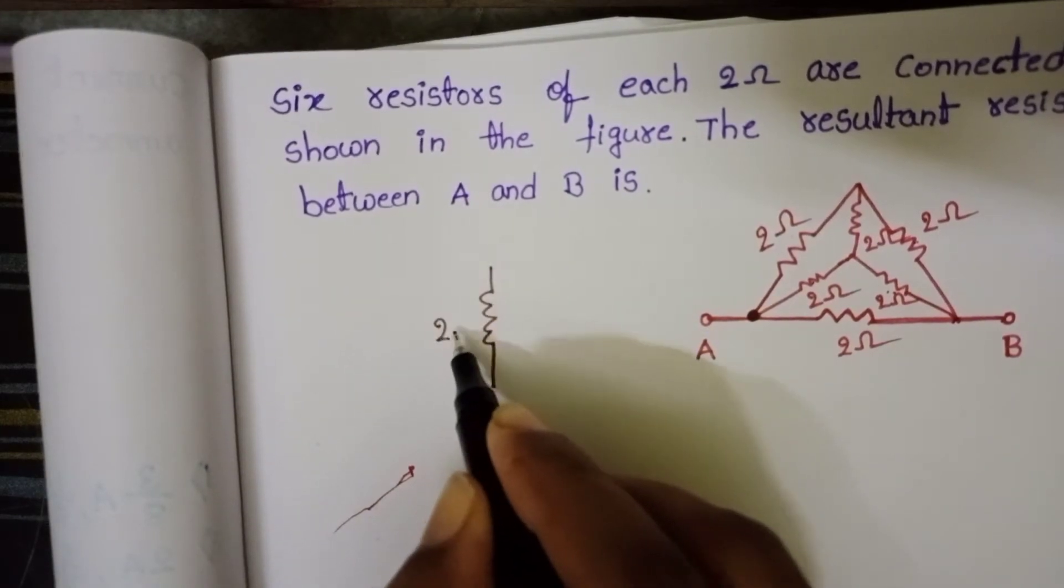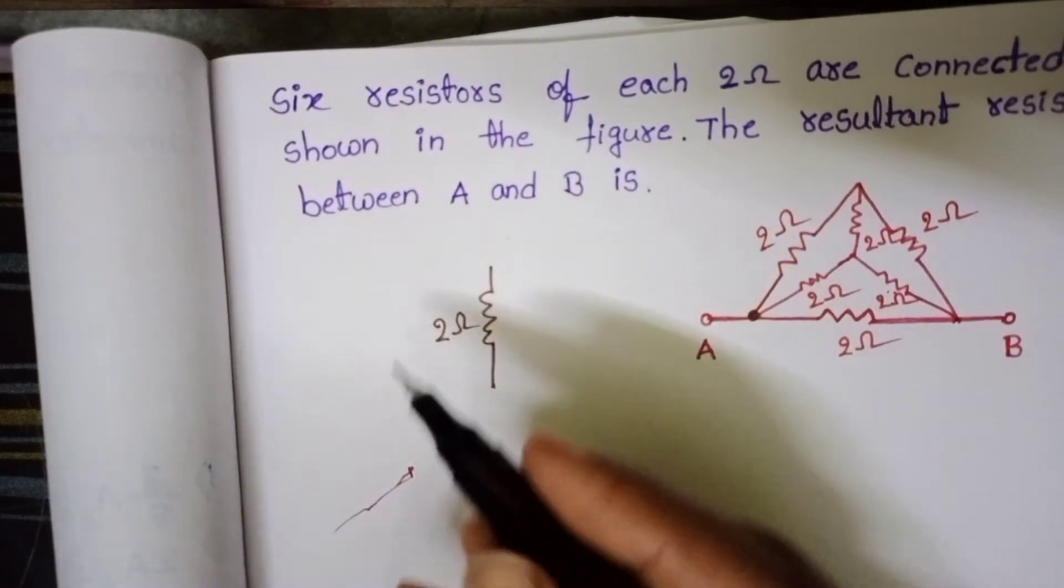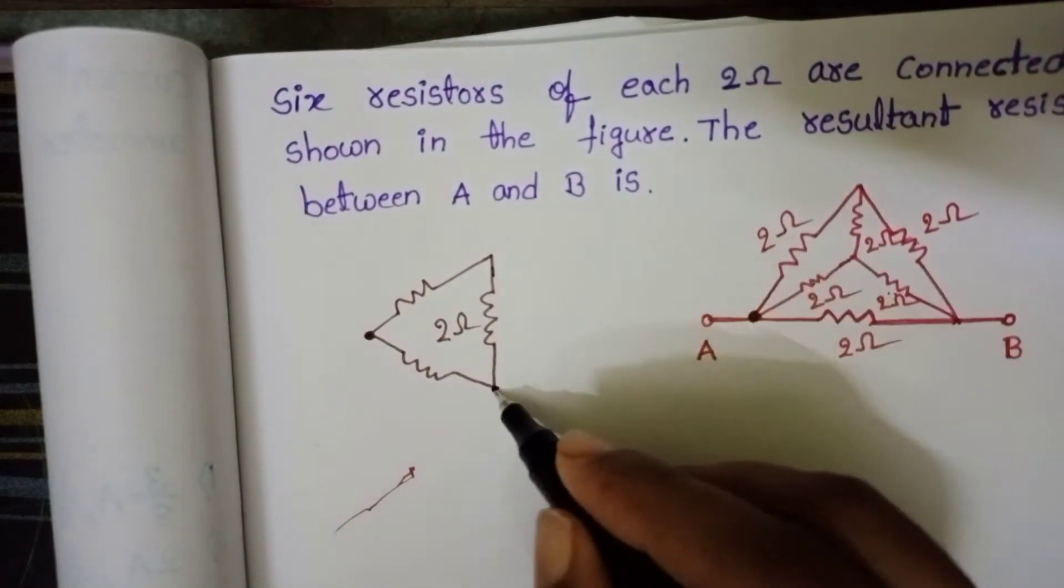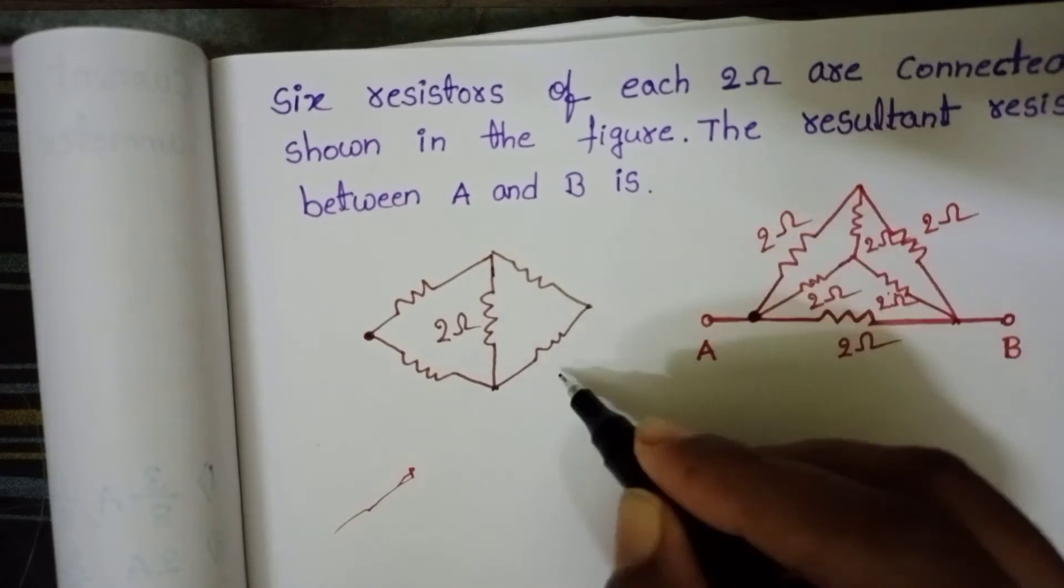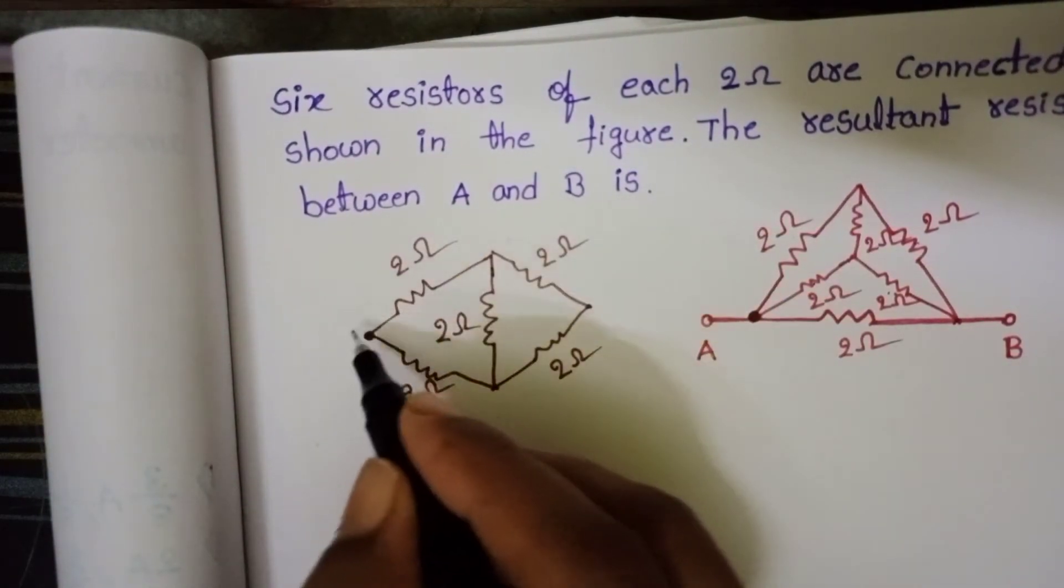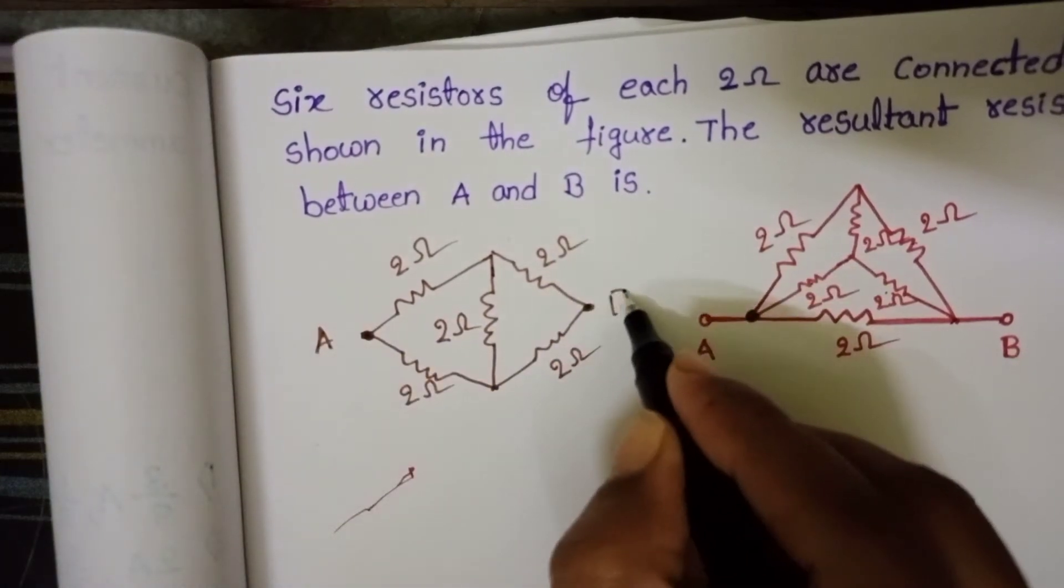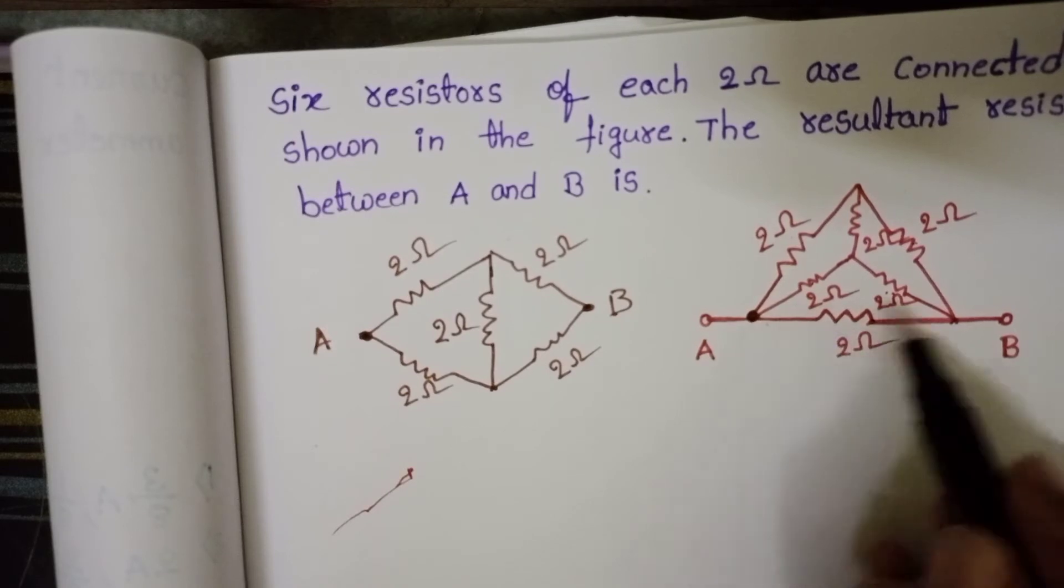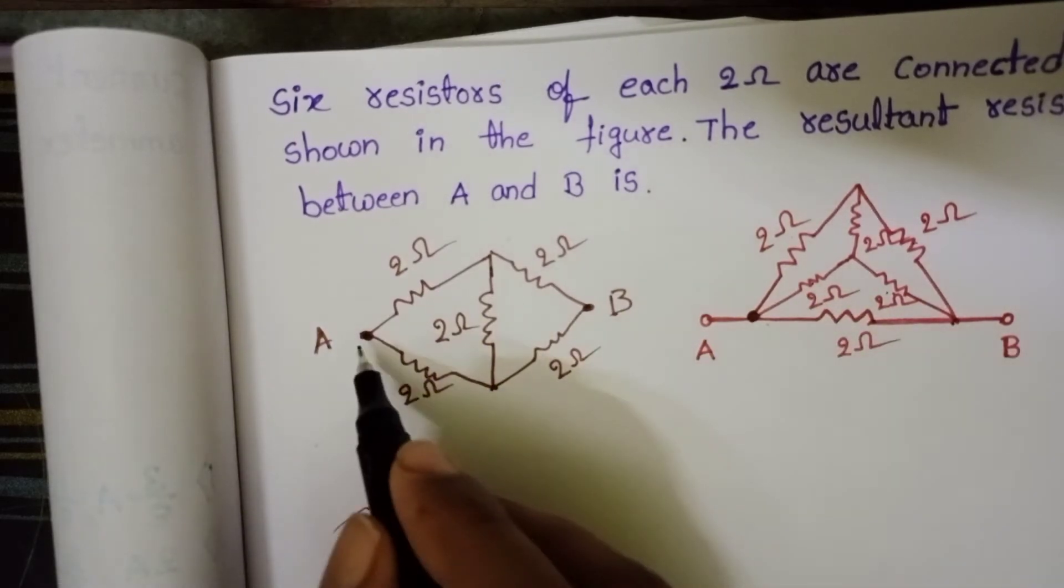2 ohm resistor. This point is A and this point is B. Now this resistor also connected in between A and B points.